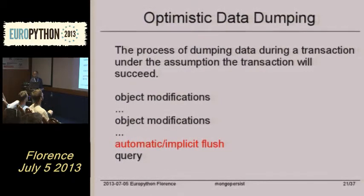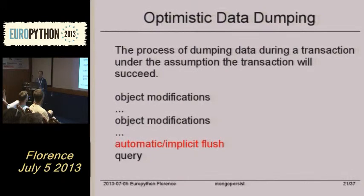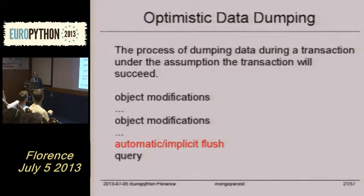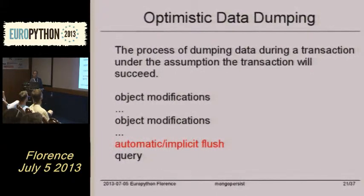MongoPersist also skips the very original state of the object at the beginning of the transaction, so we can revert in the case of a problem. For example, if I would have issued a transaction abort, the original state would have been restored in the database.